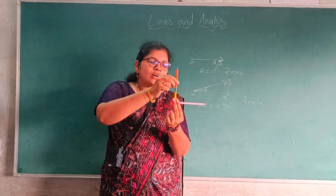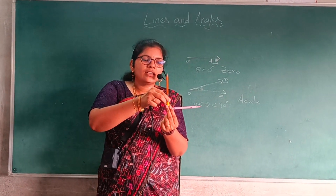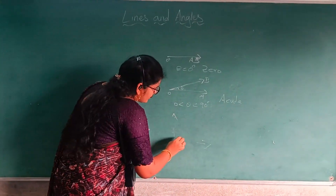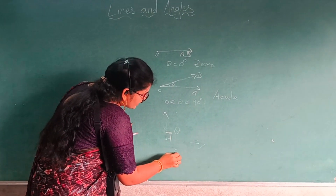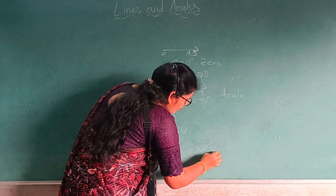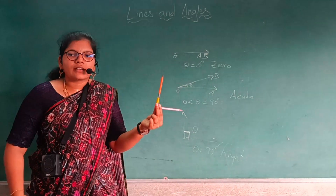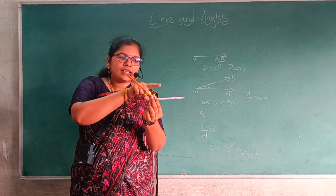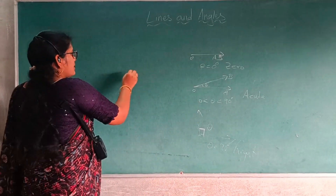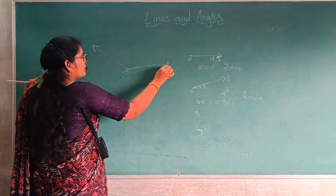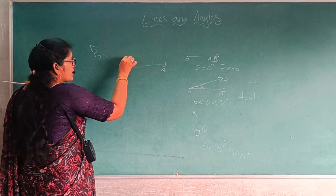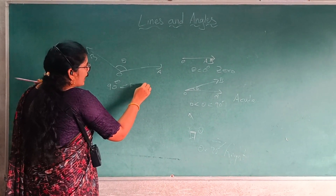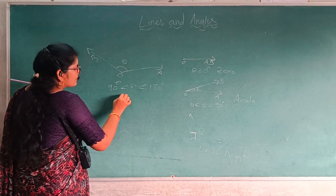Next, assume that this ray moves to a perpendicular position — this is called a right angle. The symbol of this angle is a small square, and theta is equal to 90 degrees. The next one: if this ray moves a little more, creating a larger angle — this is called an obtuse angle. Theta here is more than 90 degrees and less than 180 degrees. This is called an obtuse angle.